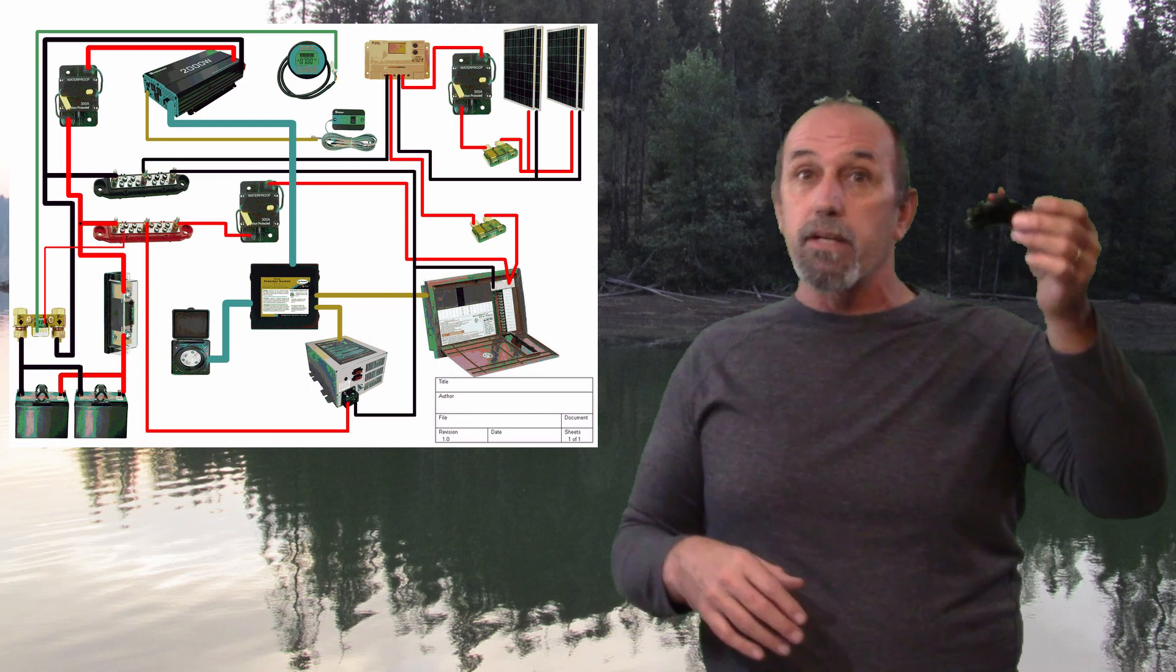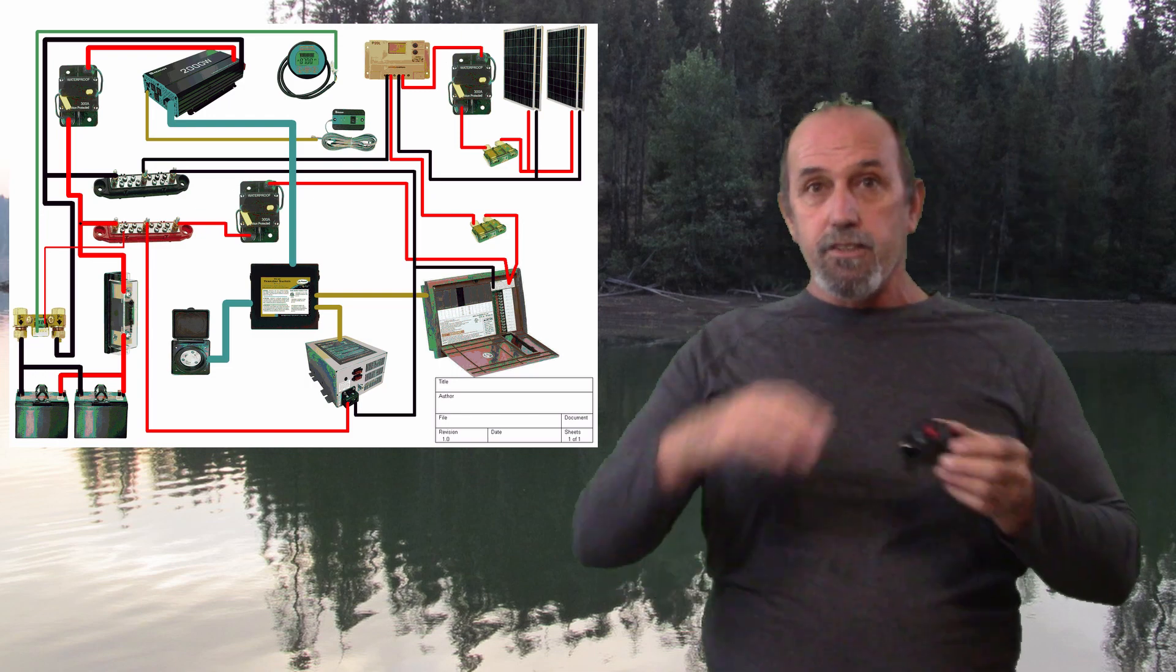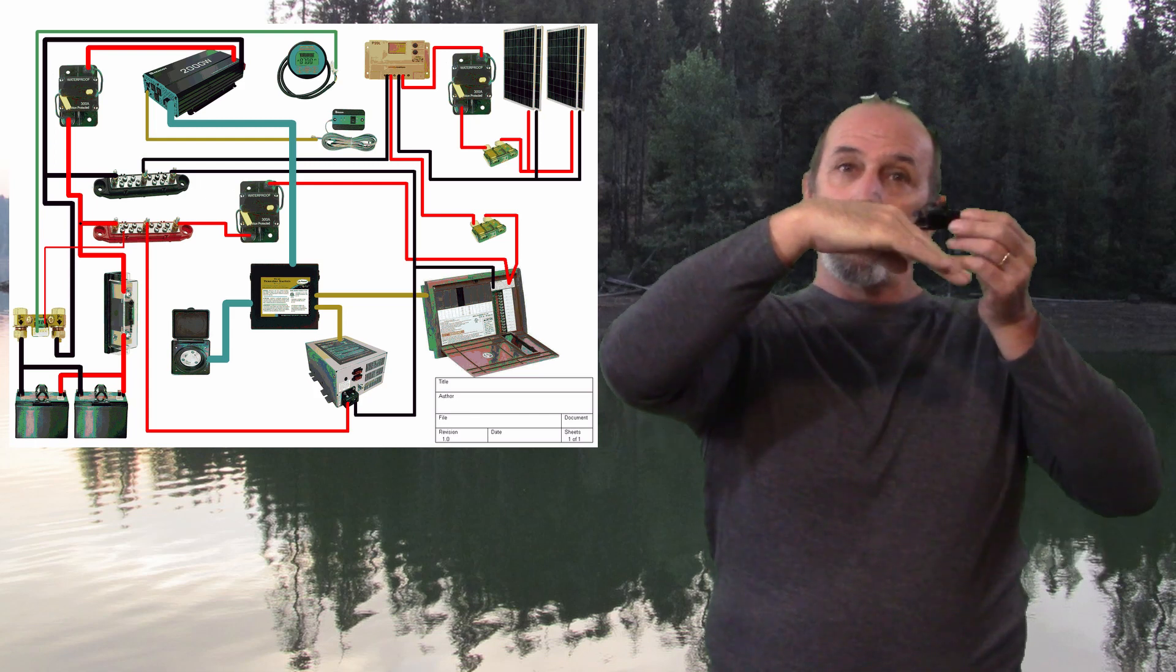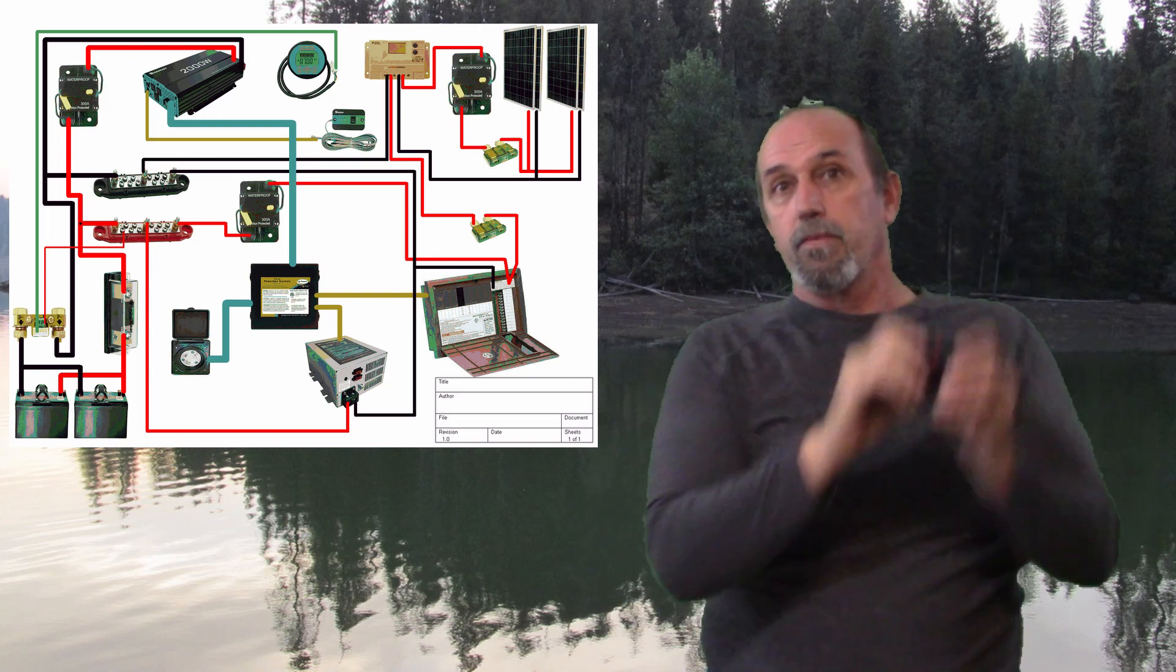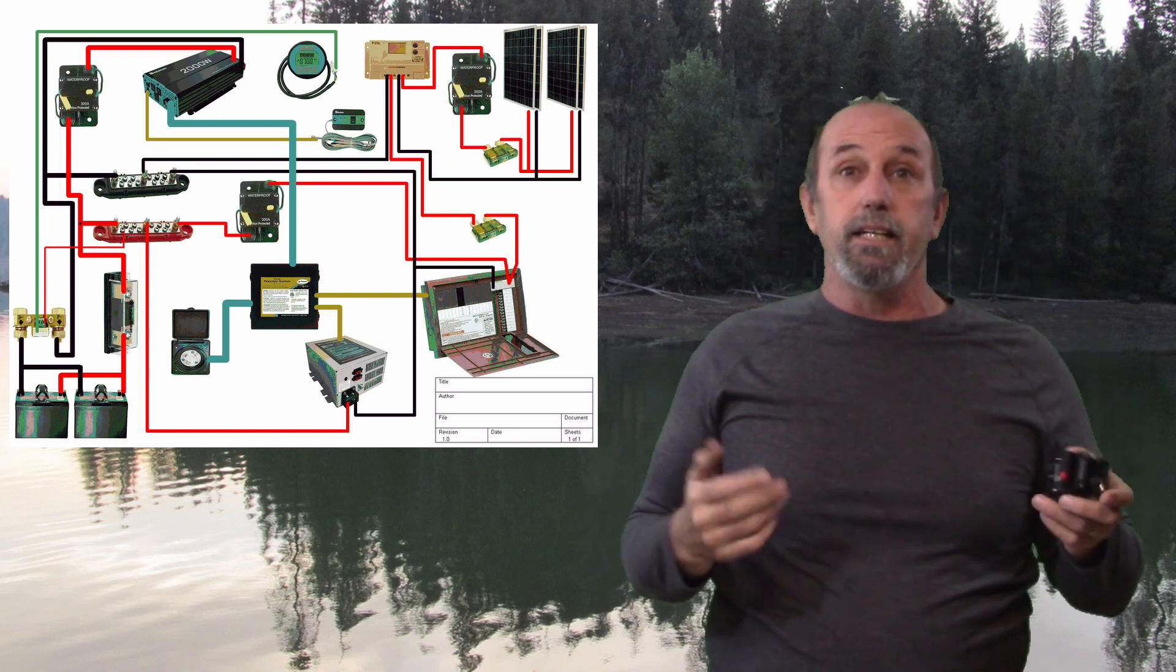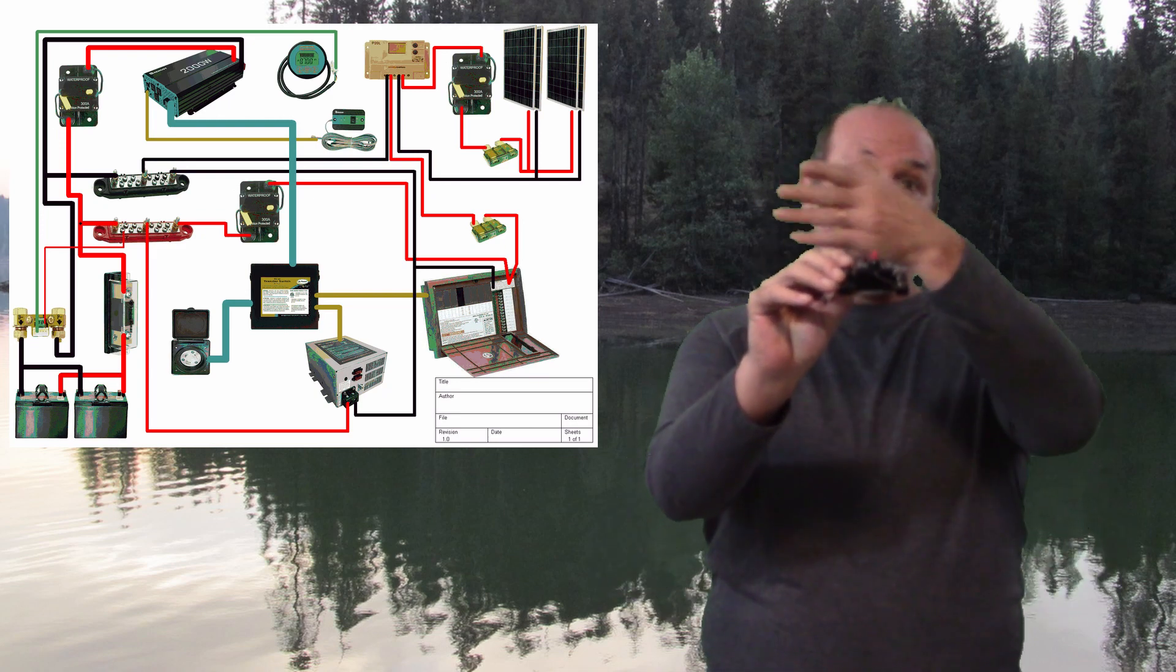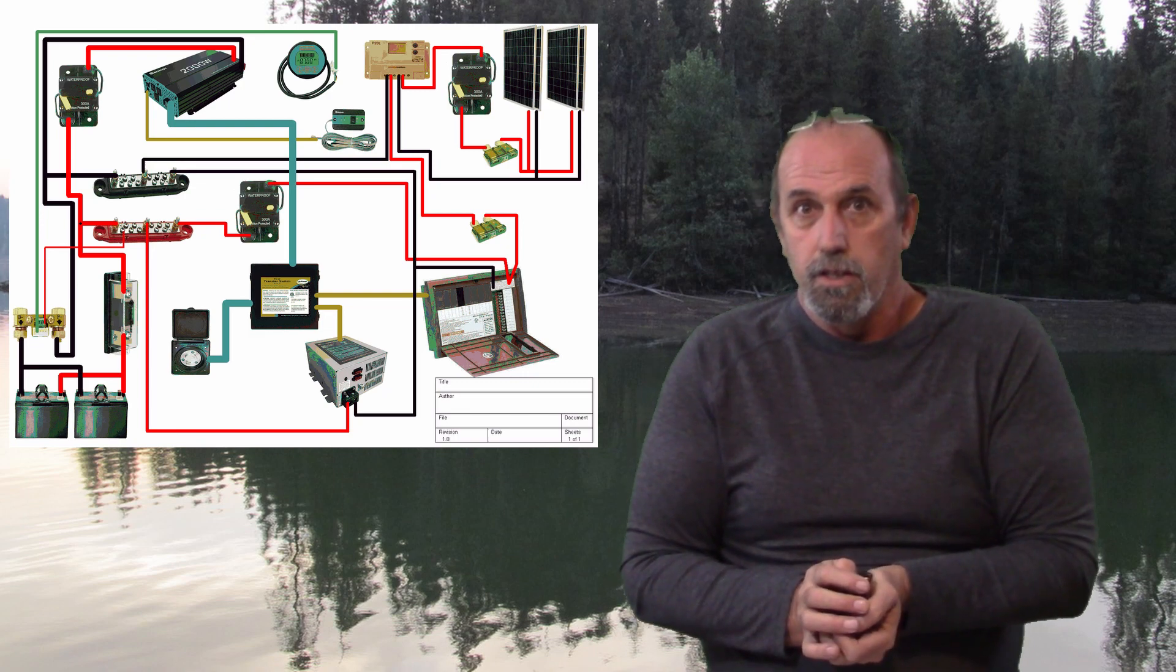This right here has got a bi-metal material inside that actually expands at a different rate. So it actually will move, flex. And when it flexes, it will pop and trip the breaker. And how it does that is by heat, and that's the heat generated by amps going across the material.